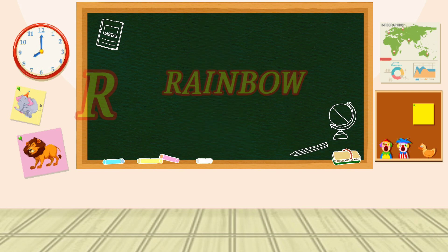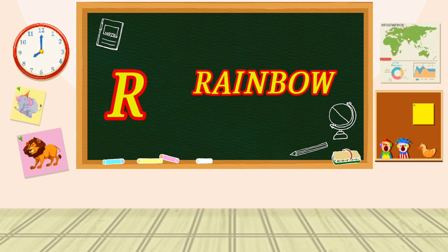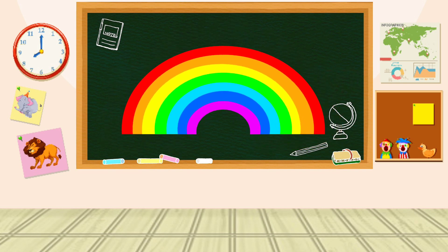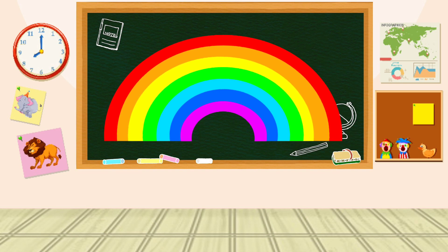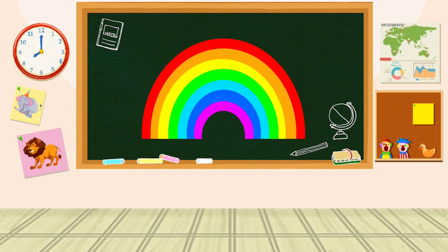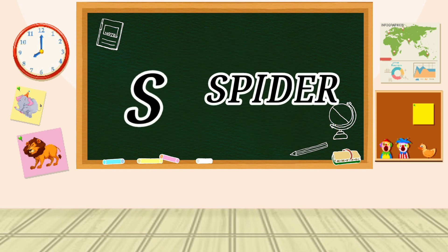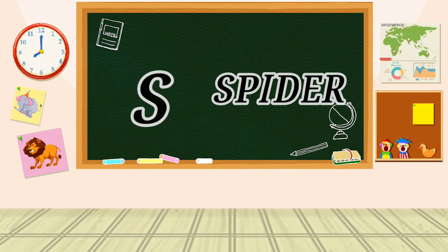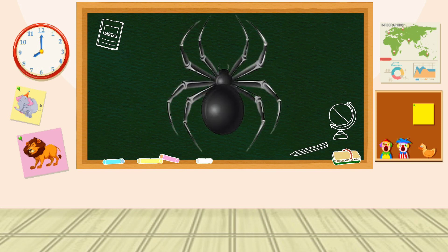R is for Rainbow. R-R-Rainbow, R-Rainbow, R-Rainbow. S is for Spider. S-S-Spider, S-Spider, S-Spider.